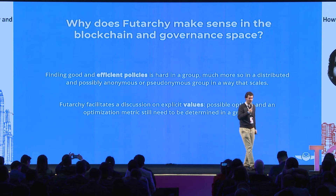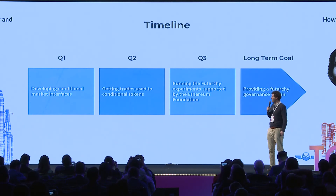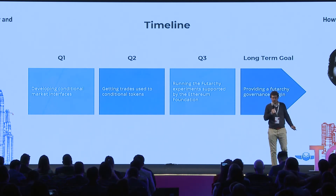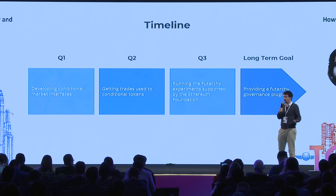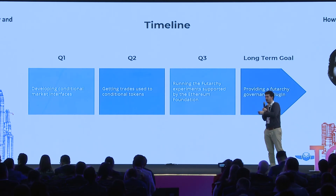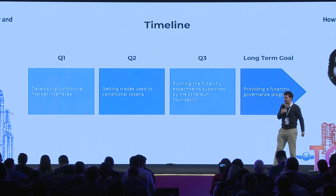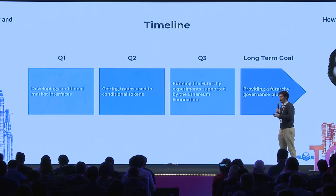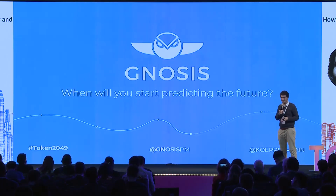Those were the two use cases: reducing risk and futarchy. Currently we have conditional trading ready to support those conditional tokens. Now we need to get people used to these new concepts — to actually trade a token only under specific conditions, with different prices for the token depending on different possible futures. Once that is established, we can go even further and experiment with these new governance mechanisms. Thank you.